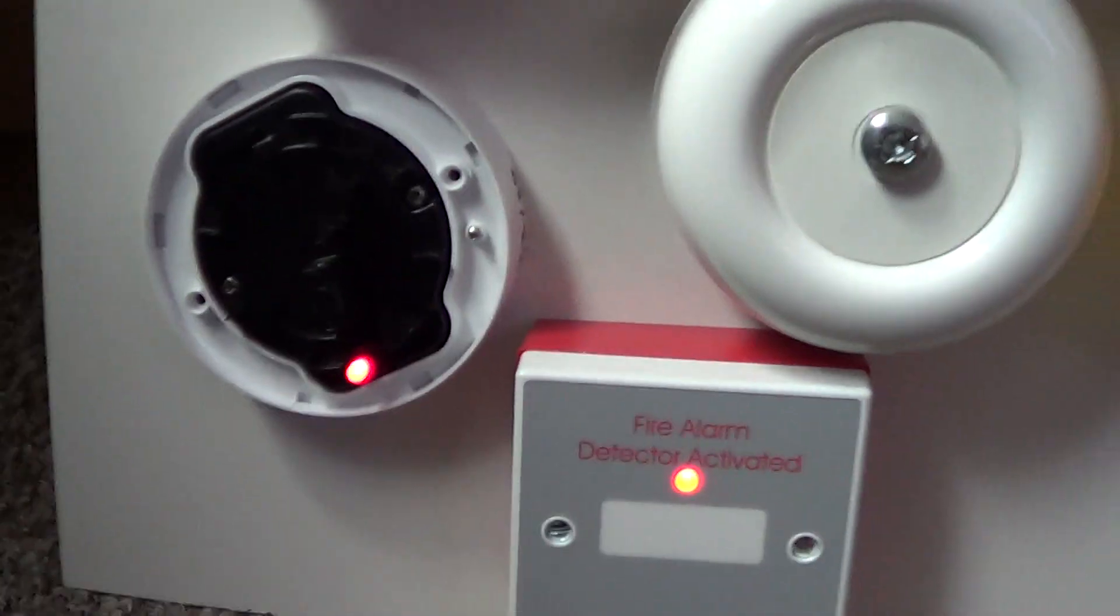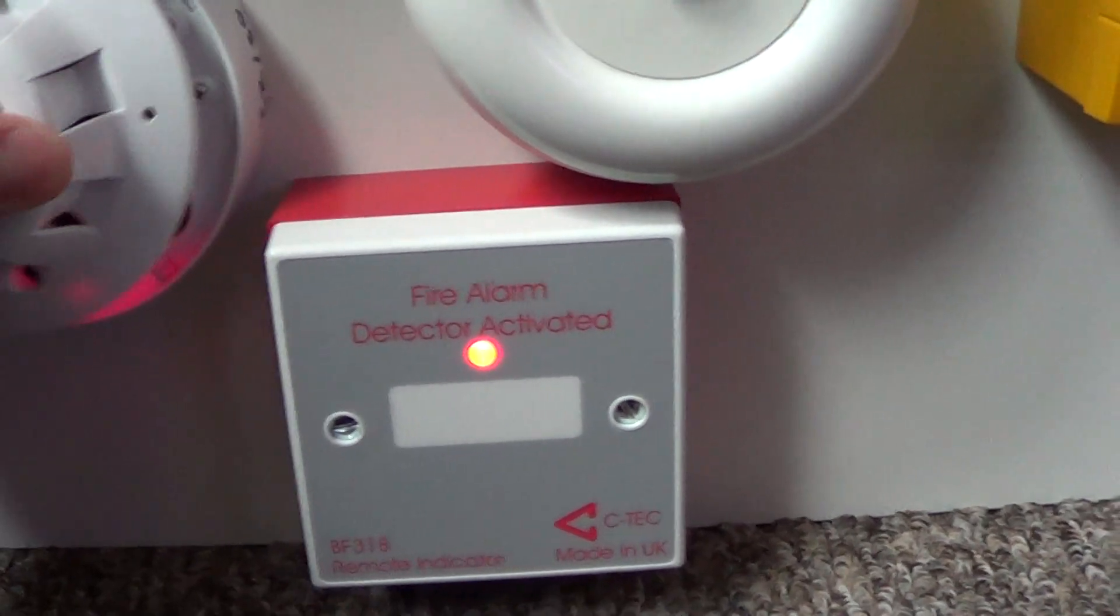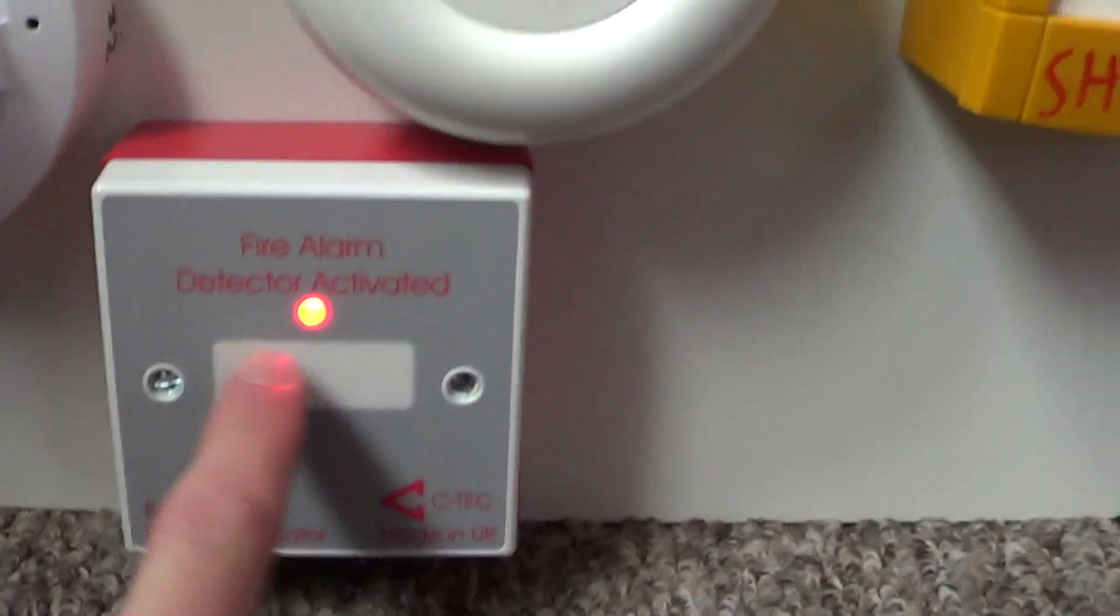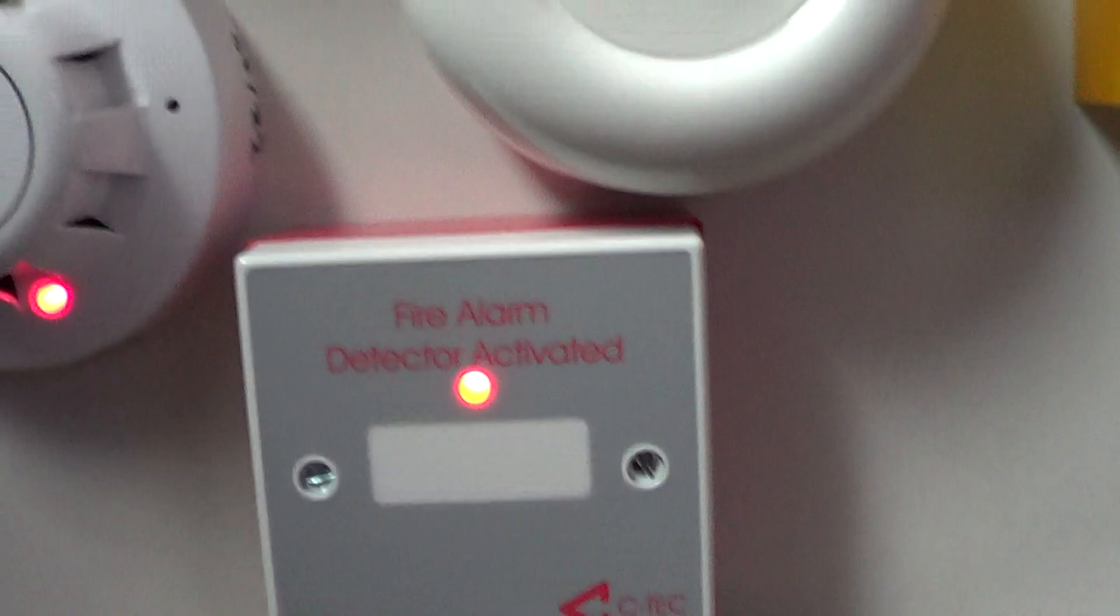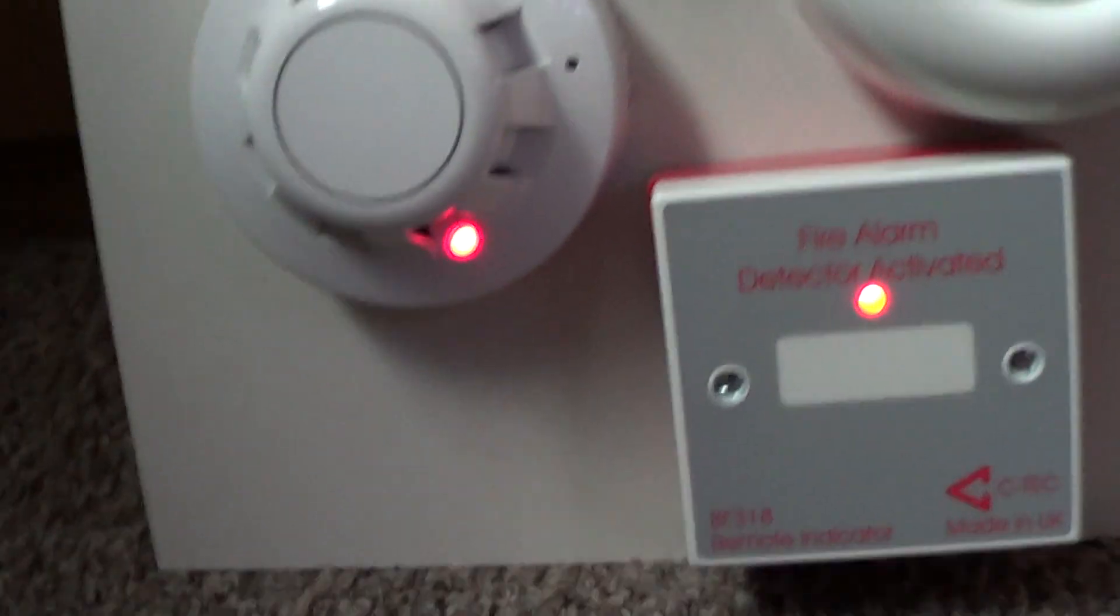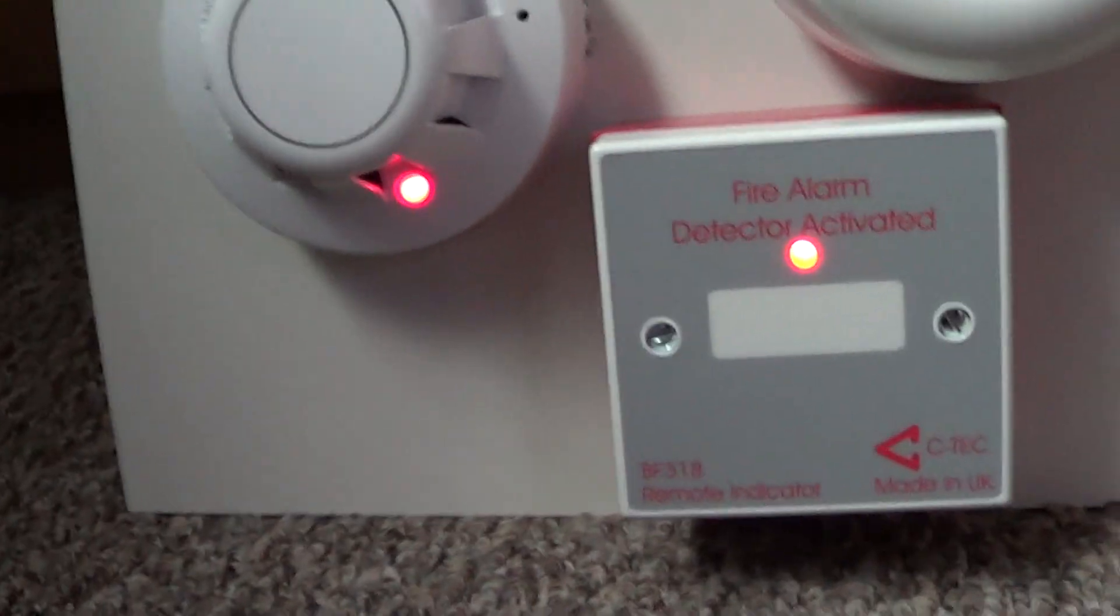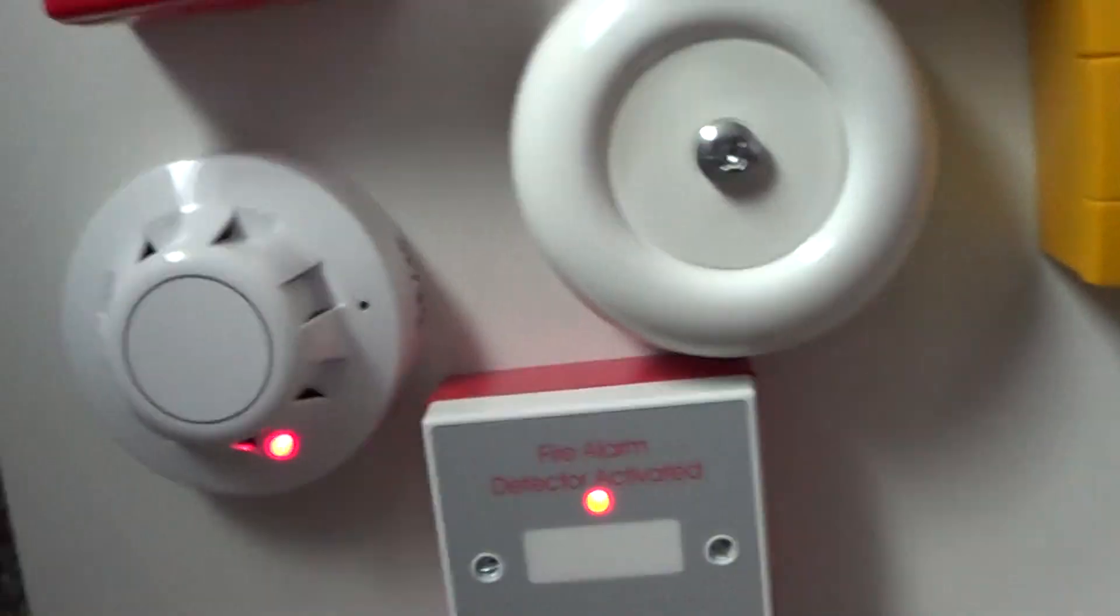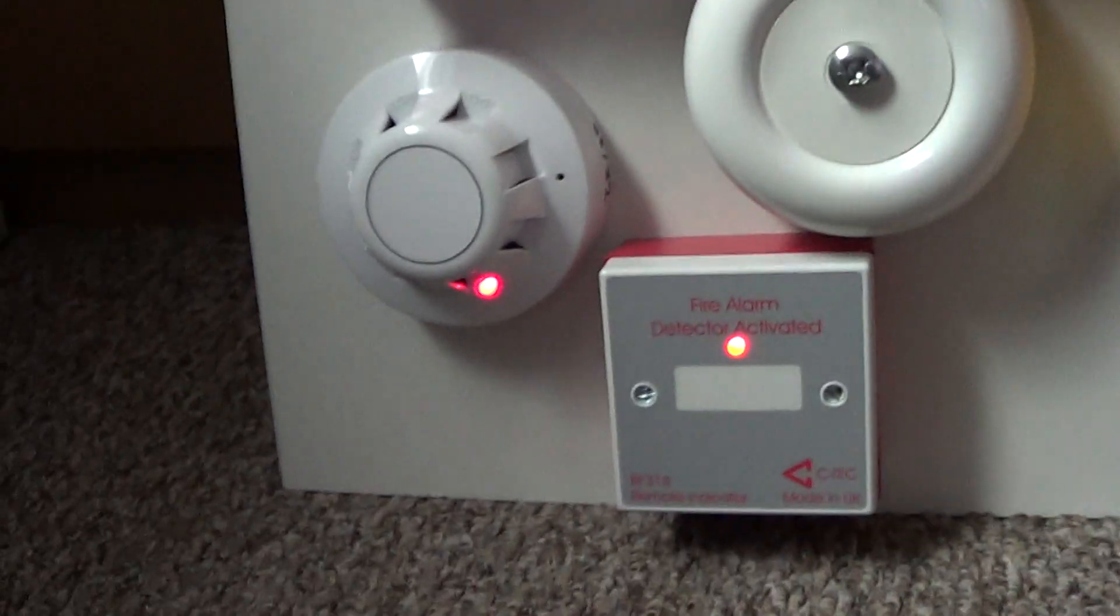So the remote output indicator will show if this smoke detector is activated, if it's in a hidden location for example. If it was in a cupboard that's locked up that only certain people are allowed to get into, it would allow anyone to see that the smoke detector in there or the device has been activated.